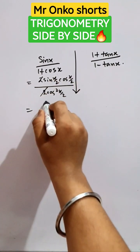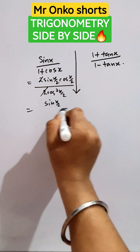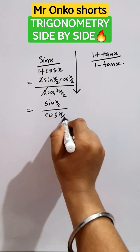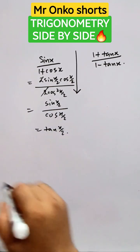Now 2 2 will be gone and one of the cos will be gone. So it will be sine of x by 2 divided by cos of x by 2 which will be tan of x by 2.